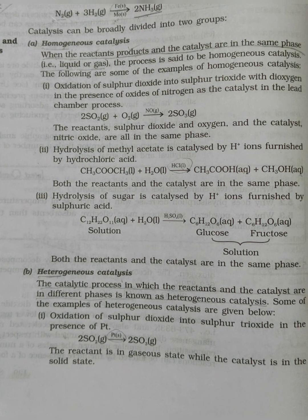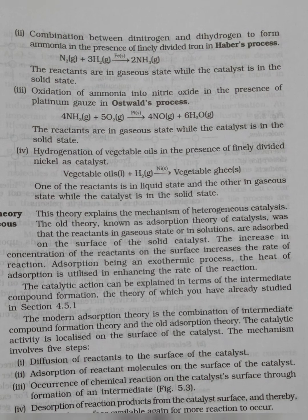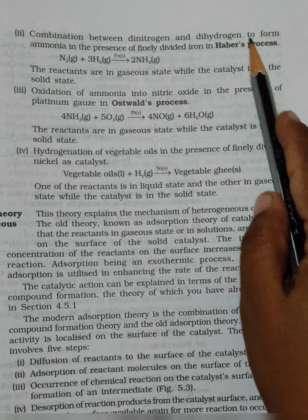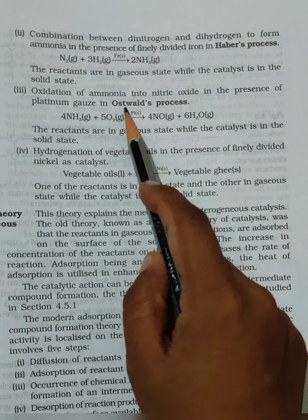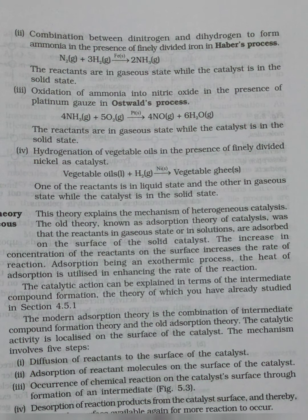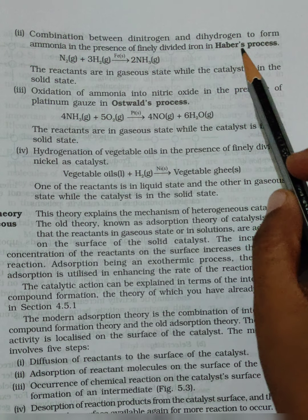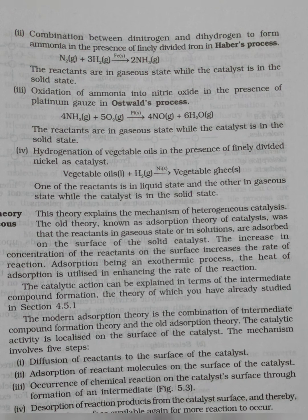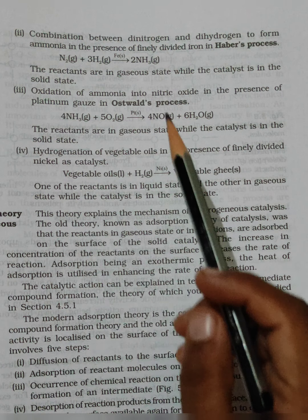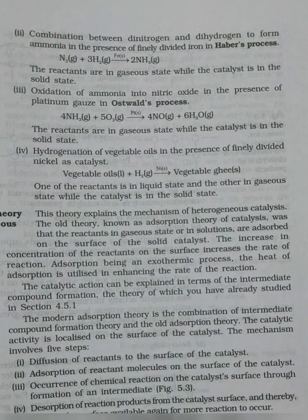On page 131, Haber's process and Ostwald process — these all come under heterogeneous catalytic processes. Haber's process is basically the manufacture of ammonia and Ostwald process is the manufacture of nitric acid, which we will discuss in detail later.